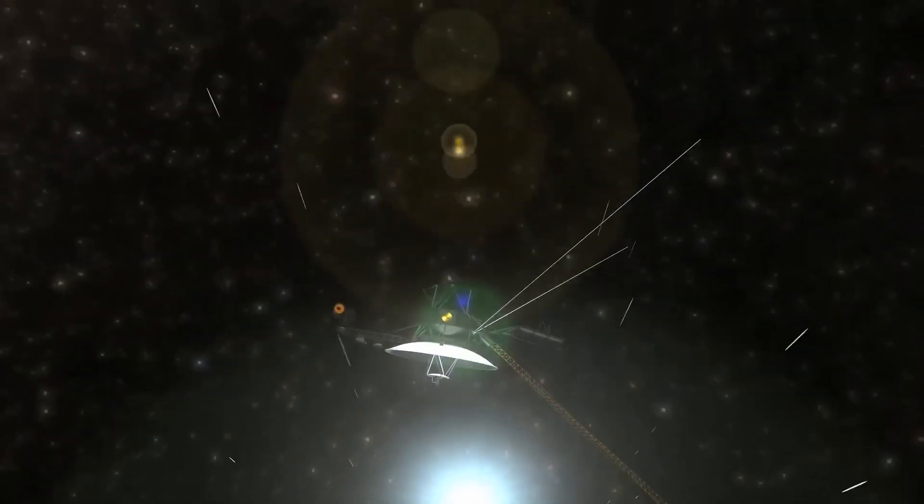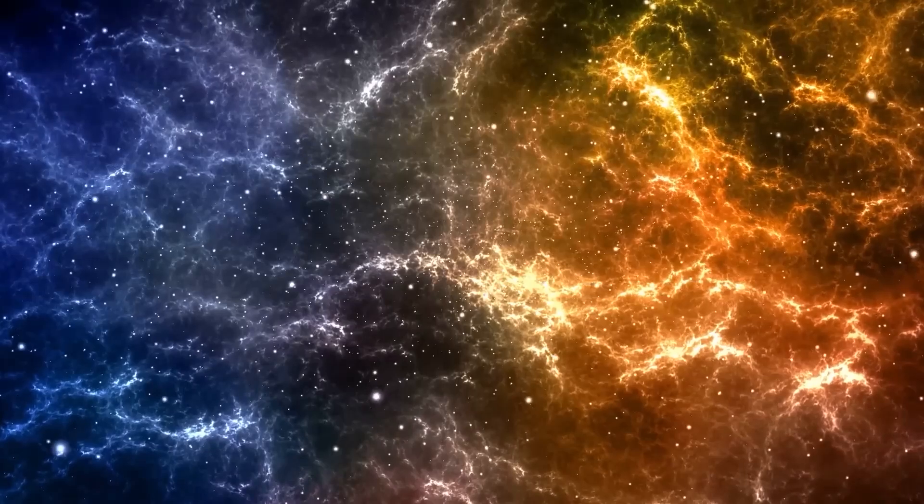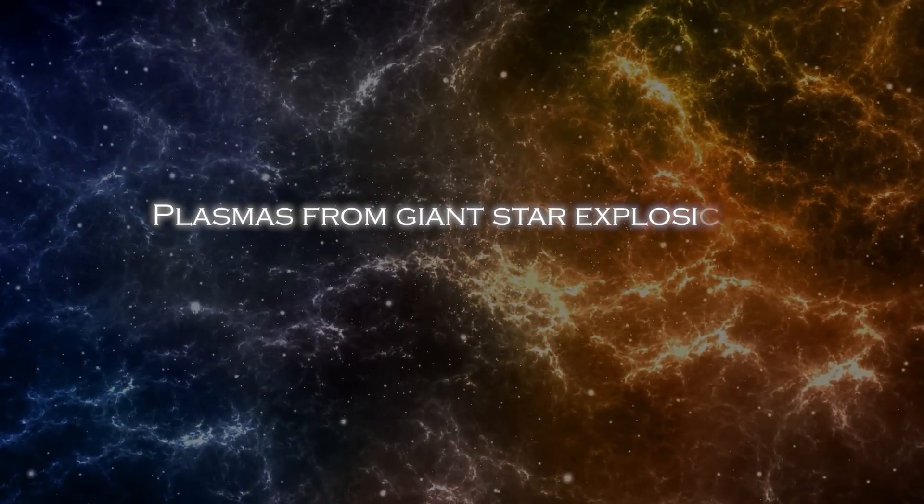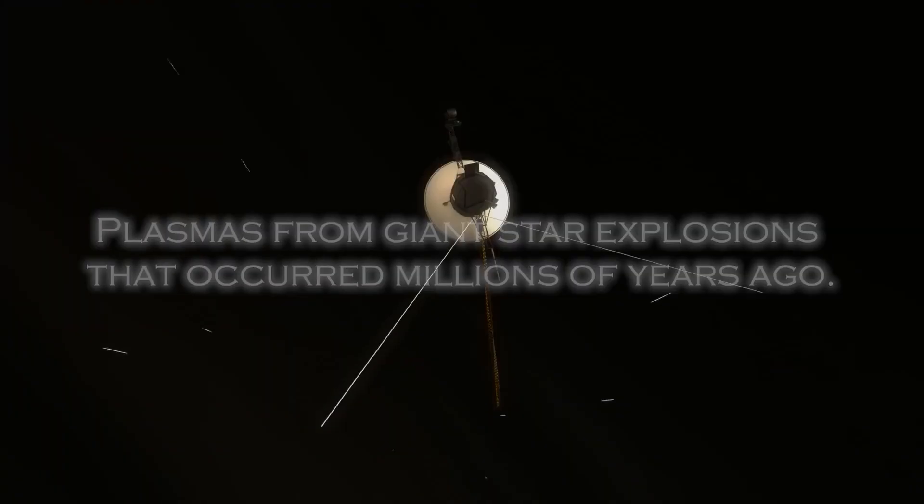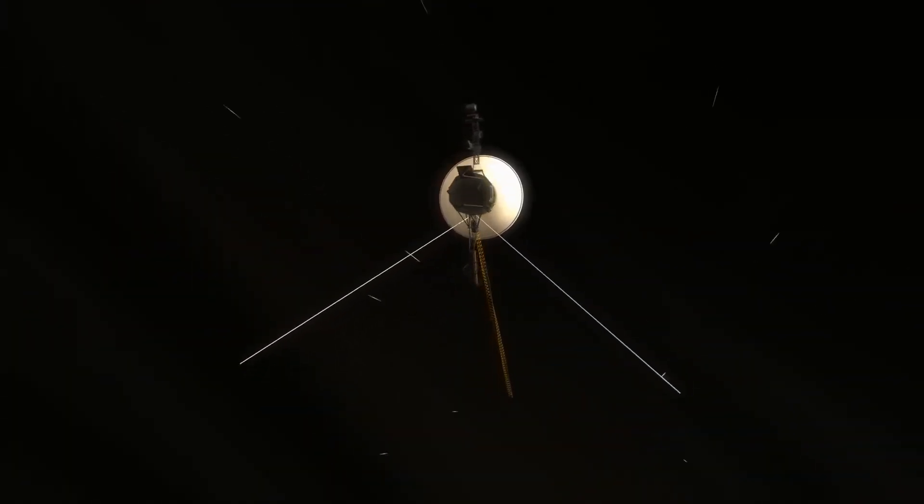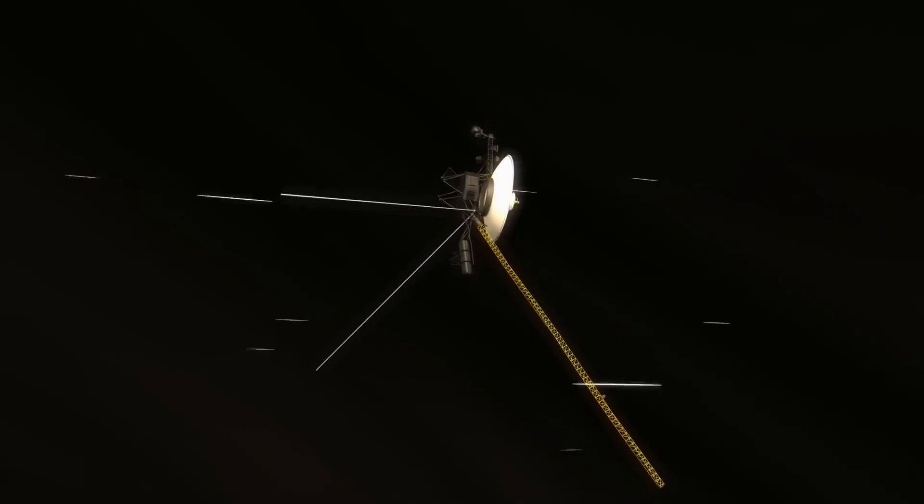Now, Voyager 1 has detected the presence of 300 unknown objects passing through space. This discovery has completely changed our understanding as these objects have been found to be plasma from giant star explosions that occurred millions of years ago. Join us on this journey through the cosmos to find out what these objects discovered by Voyager 1 are all about.